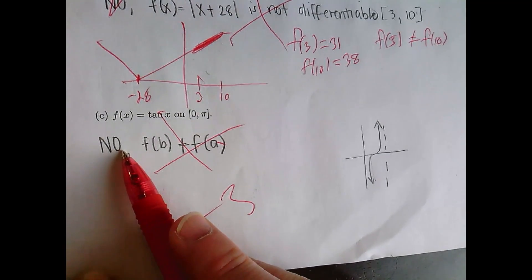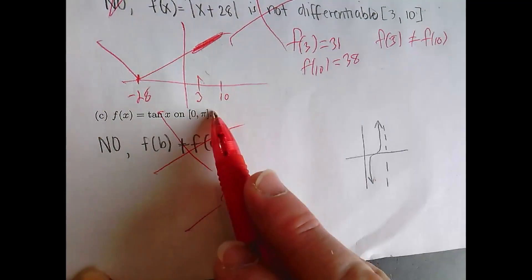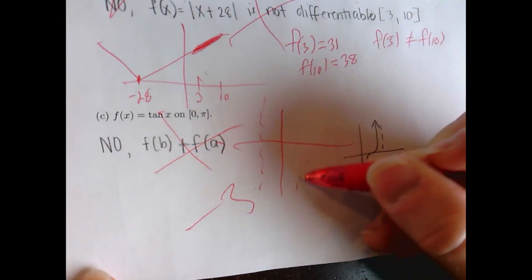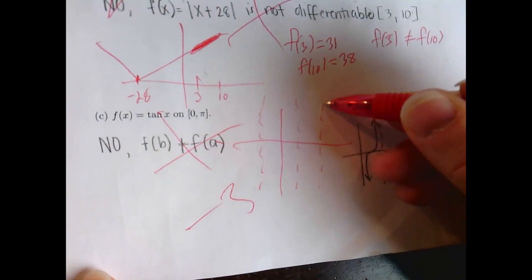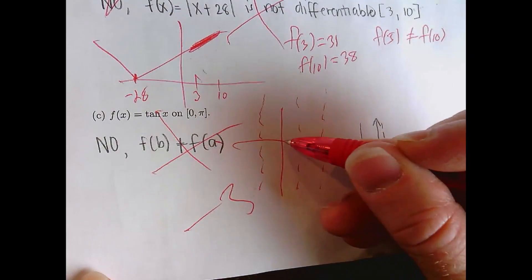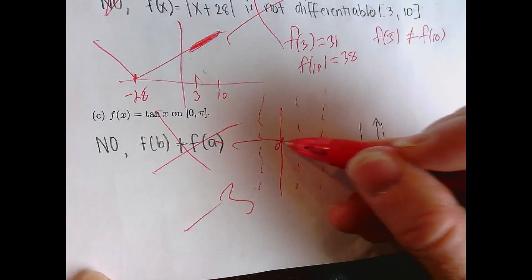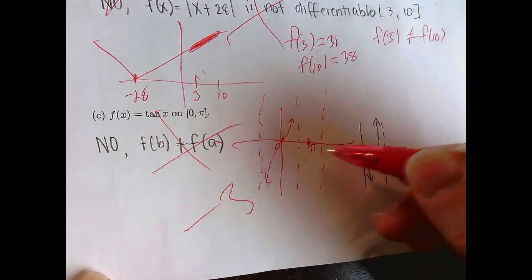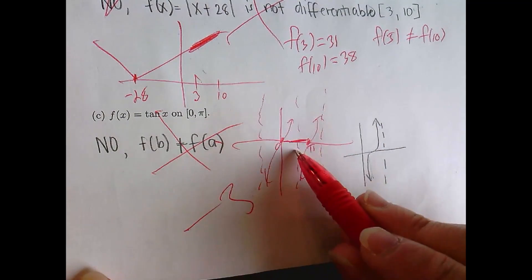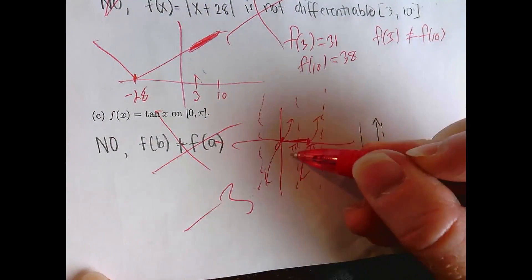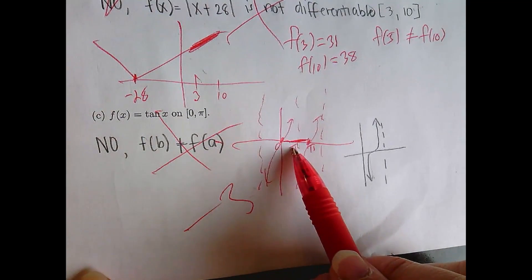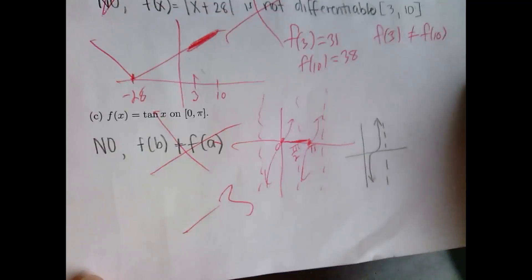The answer is no because it's not continuous at π/2. The graph of tangent has infinitely many vertical asymptotes. Between zero and π, there's a discontinuity at π/2, and π/2 is in this interval, so things fail. The answer is no because it's not continuous — and that's the whole test.